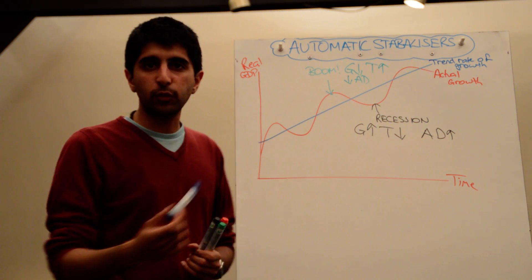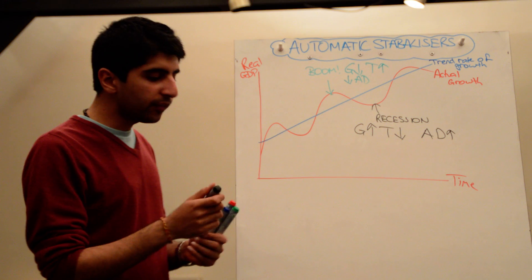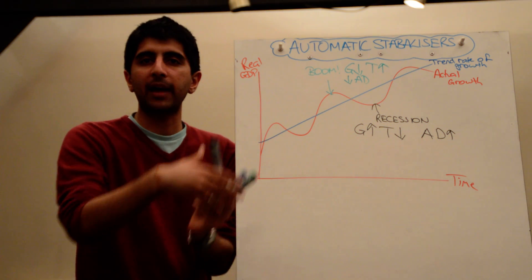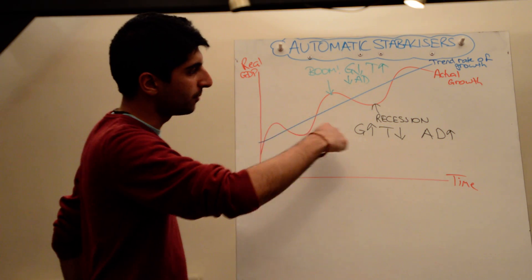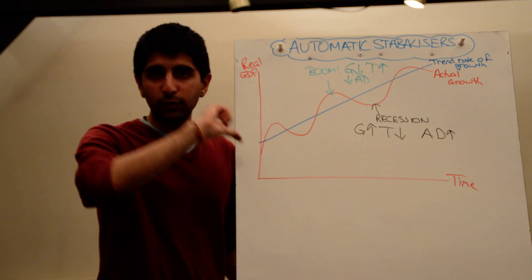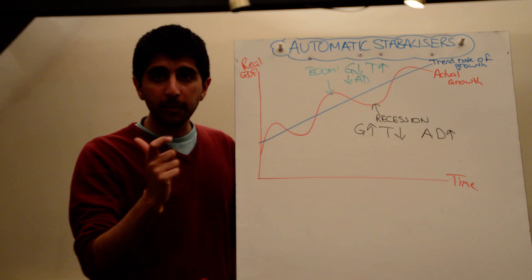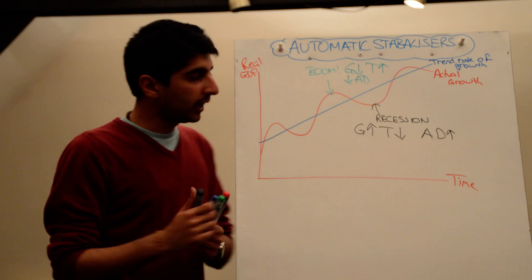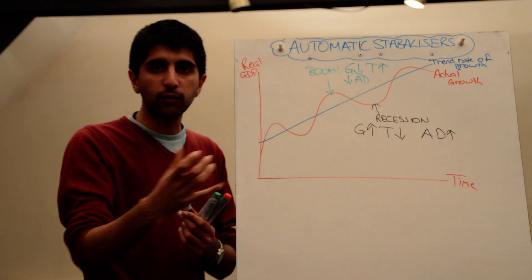They allow the economy to transition on a smooth path of growth rather than suffering these big fluctuations in actual growth. So whereas in the red line that's what might actually happen, with automatic stabilizers as a result the actual red line, the size of the deviations from the trend rate of growth actually minimizes.